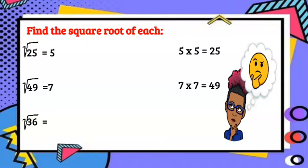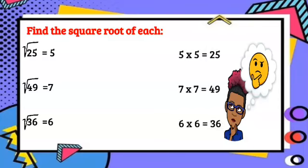So what's the square root of 36? 6. So 6 times 6 would be equal to 36.